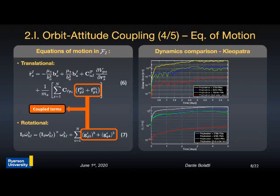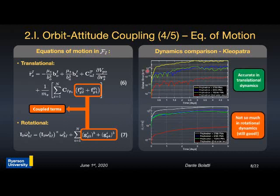A comparison between the proposed model and two models from the literature is performed for validation by propagating trajectory and attitude and comparing against an exact model, with another accurate model included in red. The trajectory error is very low compared to the more accurate model; however, the attitude error is larger. Nevertheless, this doesn't have a large impact since in real applications the spacecraft is oriented in a specific direction and the gravity gradient torque is treated as a perturbation that is compensated.